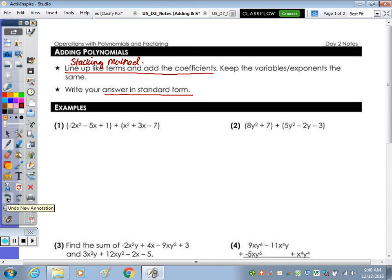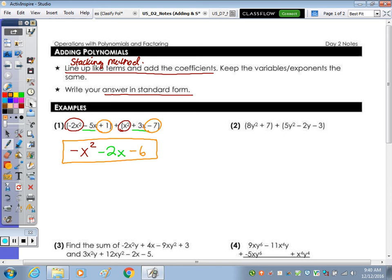Standard form is highest to lowest exponent, so I'm going to combine the x squares. Negative 2 plus 1 is negative 1, so that would be negative x squared. The next in order would be the x's, negative 5 plus 3 is a negative 2, keep the x. And then last, the constants, 1 minus 7 is a negative 6. So that's just combining straight across versus the stacking method here.